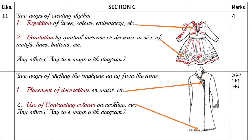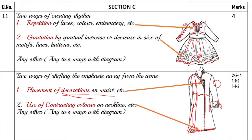Two ways of shifting the emphasis from the arms: first is placement of decoration. I have not made use of any decoration at the arms — I have used embroidery at the neckline and the hemline. This is placement of decoration, away from the arms. Second is use of contrasting colors — you can use contrasting colors here. You can also give a dupatta or stole. If the person has heavy arms, you can also make use of vertical lines.